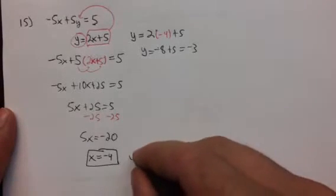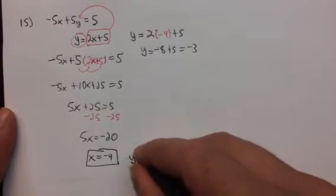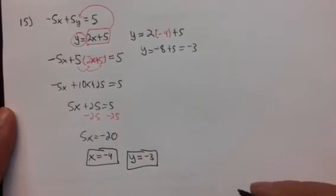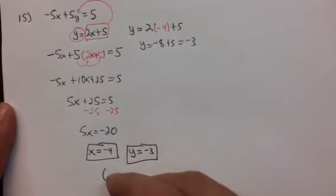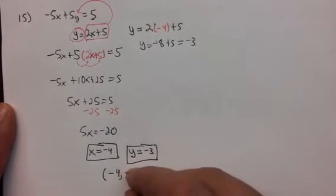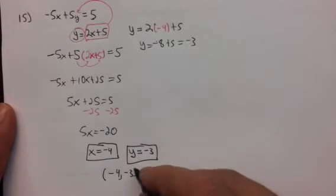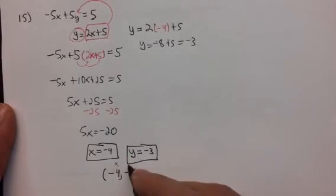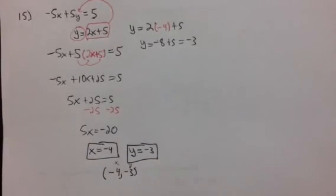And so our solution is that x is negative 4 and y is negative 3. It's also completely acceptable to write your solution as a point, x comma y, negative 4 comma negative 3. If it's x and y, the x always goes first and the y always goes second in a point. Hopefully that helps.